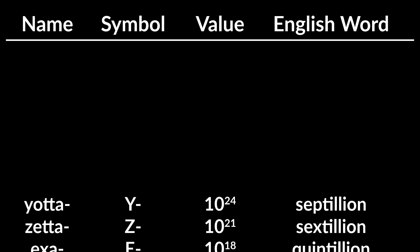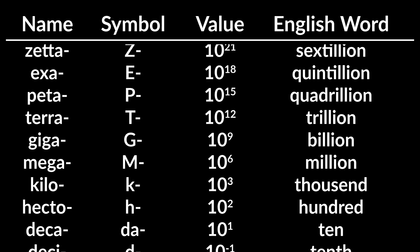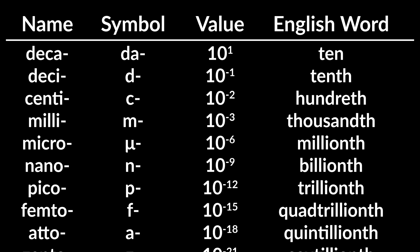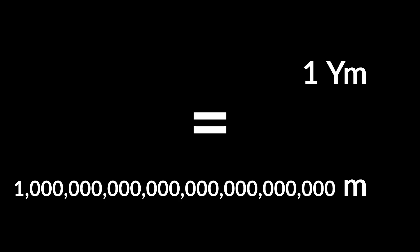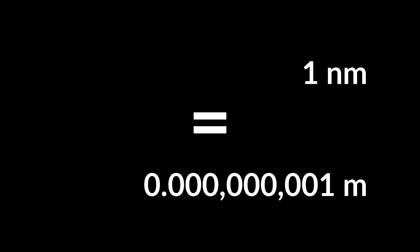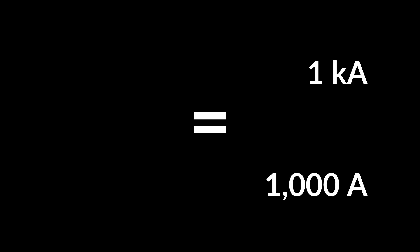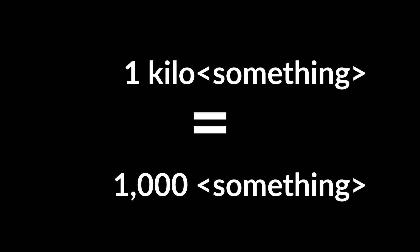Here is a table of all the officially defined prefix terms — you've probably heard of some and not others. When it says '10 to the power of a number,' that means one followed by that many zeros. So 10 to the power of 24 means one and 24 zeros. This allows you to scale up to really large numbers and down to really small numbers without inventing new units, as the imperial system did. The relationship is always the same — 'kilo' always means one thousand.